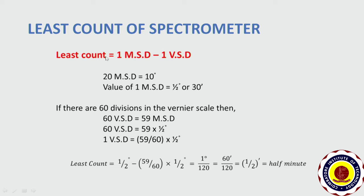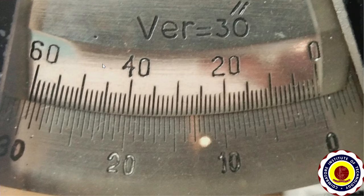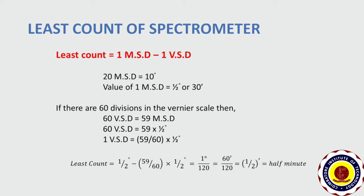In the spectrometer, if you see this scale, 20 main scale divisions will be equal to 10 degrees — in between 10 degrees and 20 degrees there are 20 divisions. So the value of 1 main scale division will be equal to 10 degrees divided by 20, which will be equal to half a degree, or 30 minutes.